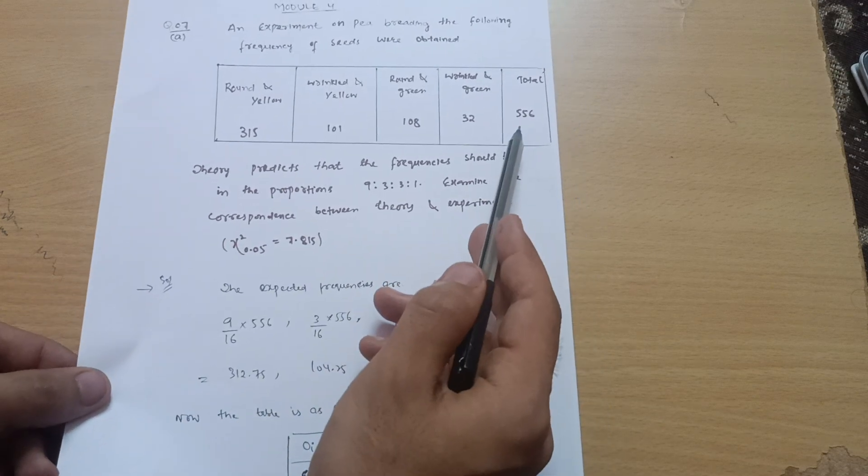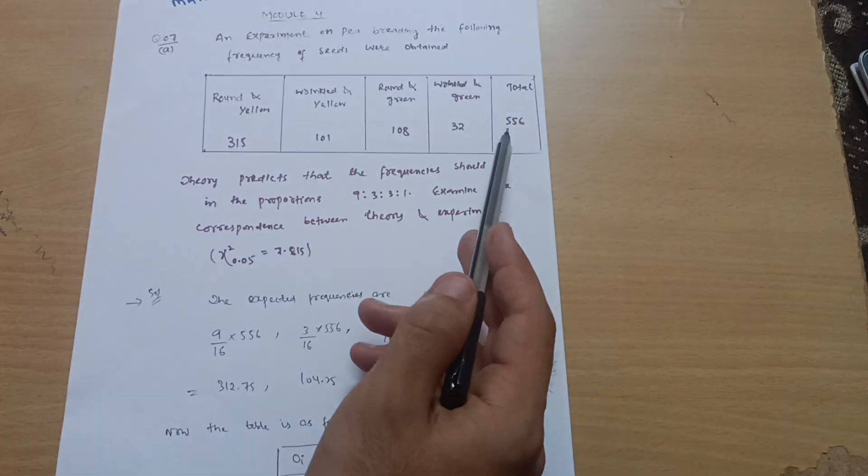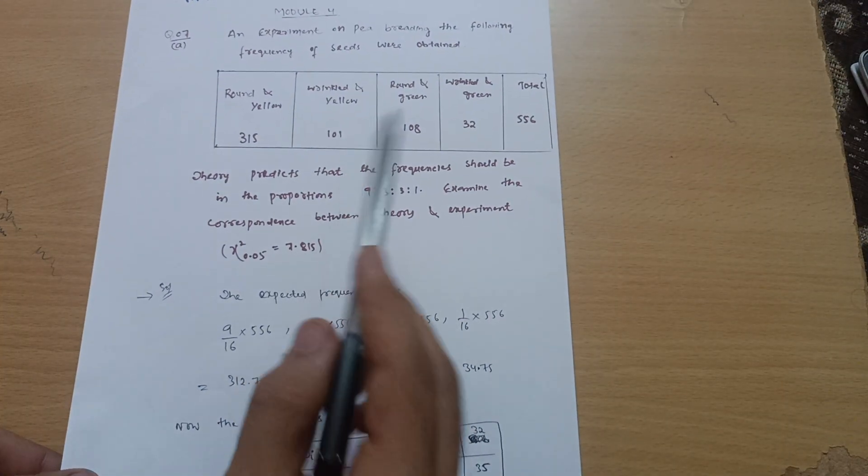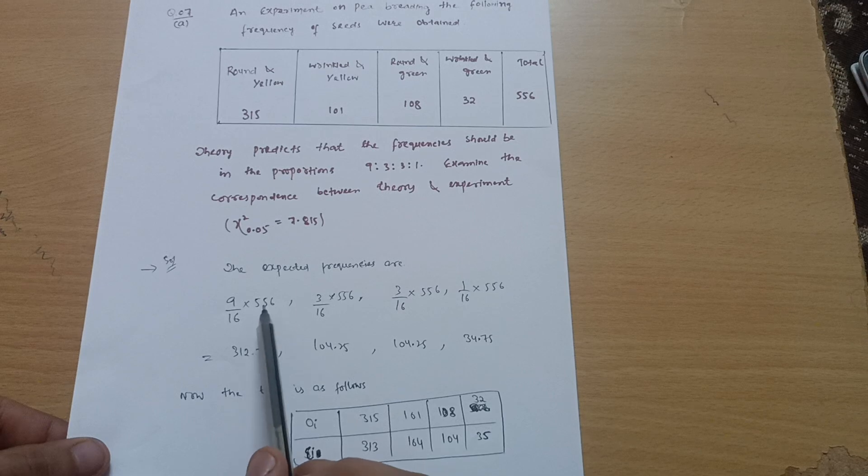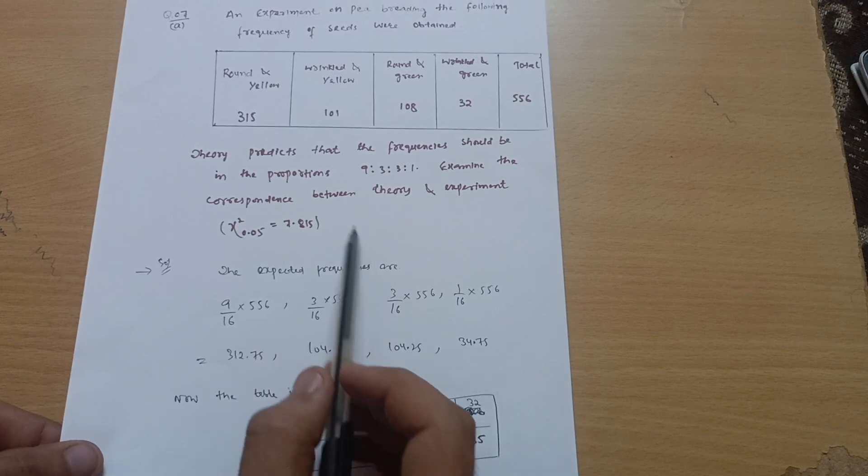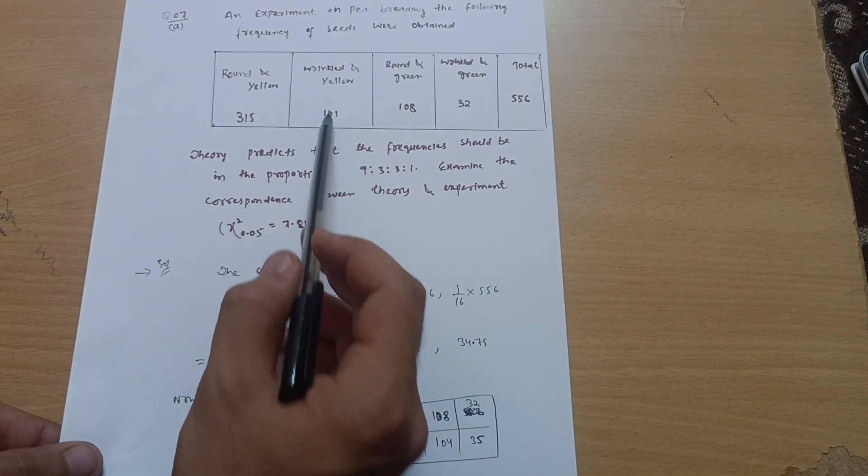This way you can get the expected value of frequency. So 9 by 16 times 556, and this 3 is for wrinkled and yellow, so 3 divided by 16 multiplied by 556.